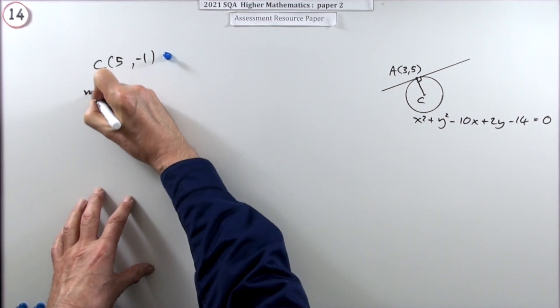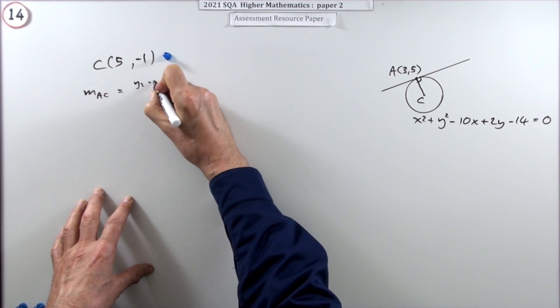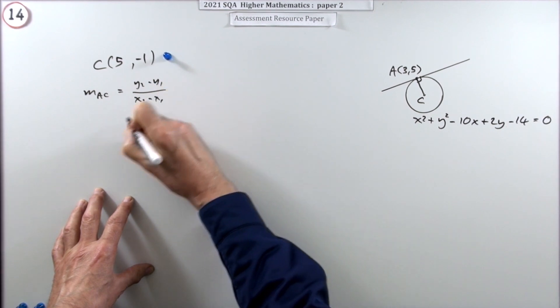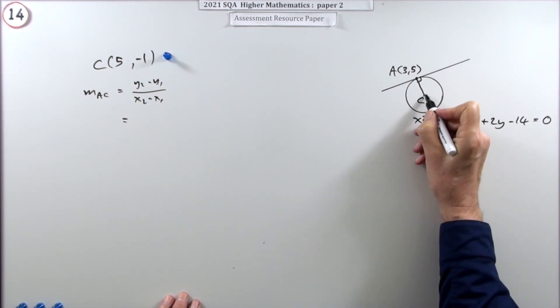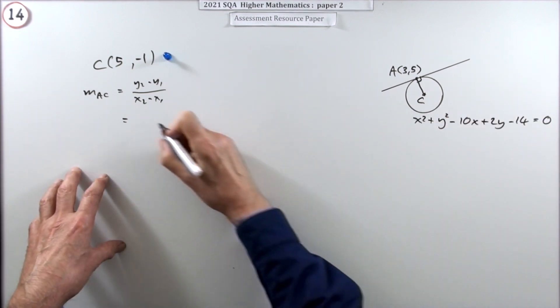Which means I can now get the gradient of AC. I'll put it down. Didn't need to put this down, but I've started. So, AC. That's 5, that's slightly further forward. I'll go with that one first.